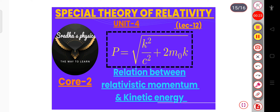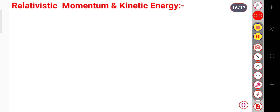P will be equal to k squared by c squared plus 2m₀ into k. Here k is nothing but the kinetic energy, or that is your Eₖ, that we have already discussed in our last lecture. Now let us start our topic: the relation between the relativistic momentum and the kinetic energy.